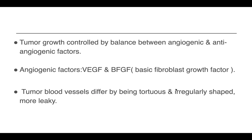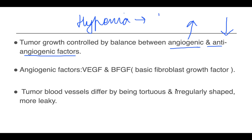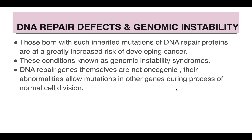Tumor growth involves a balance between angiogenic factors and anti-angiogenic factors in the body. If angiogenic factors increase and anti-angiogenic factors decrease, there is increased vascularity and angiogenesis. Due to hypoxia, there is an increase in hypoxia-inducible factor, leading to increased levels of angiogenic factors such as VEGF and BFGF — basic fibroblast growth factor. The tumor blood vessels differ from normal blood vessels because they are numerous, tortuous, and more leaky.